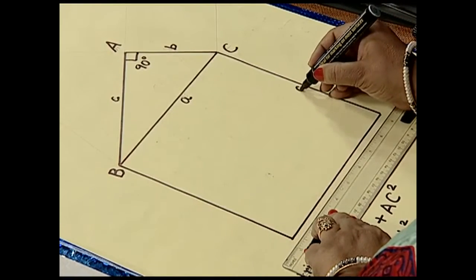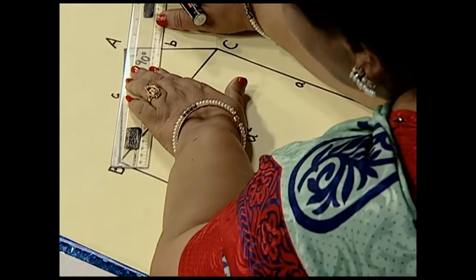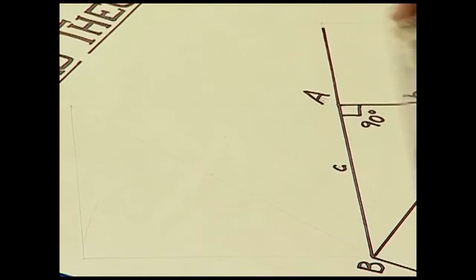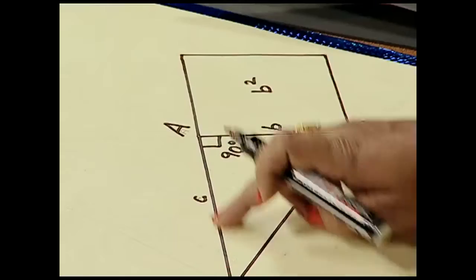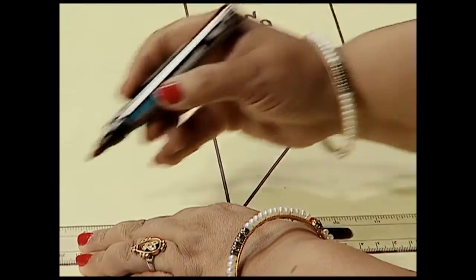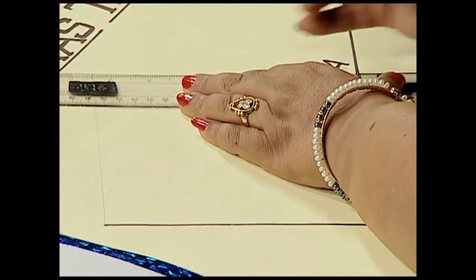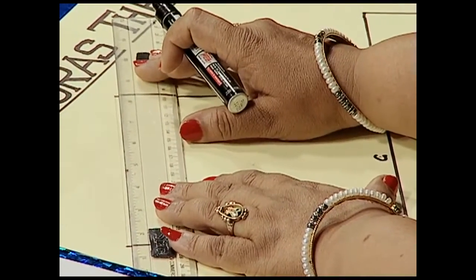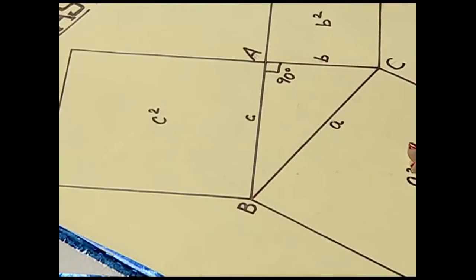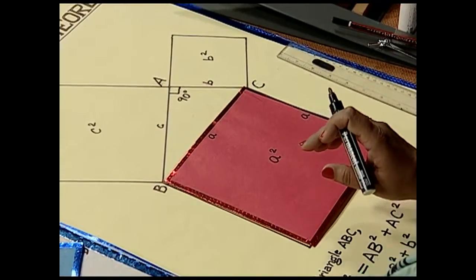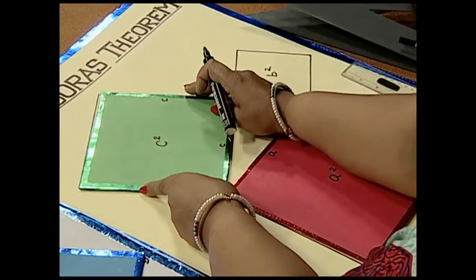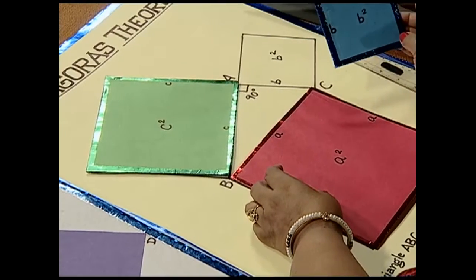Similarly, we construct a square on the side along AC whose length is b, so its area will be b². The same way we have length c, and we construct a square of length c whose area is c². We also prepare cutouts of these squares — the square of area a², the square of area c², and the square of length b with area b² placed along AC.